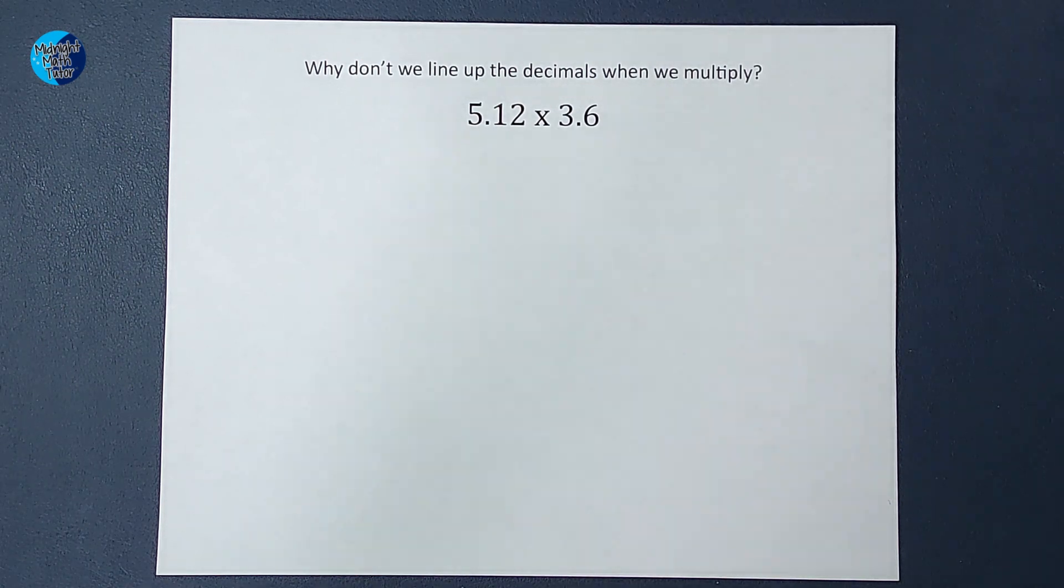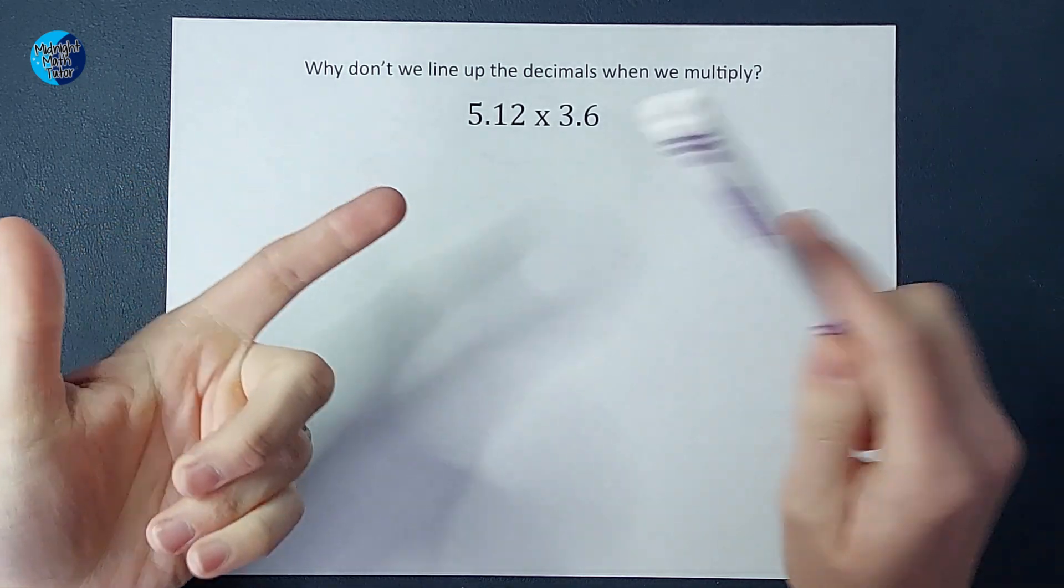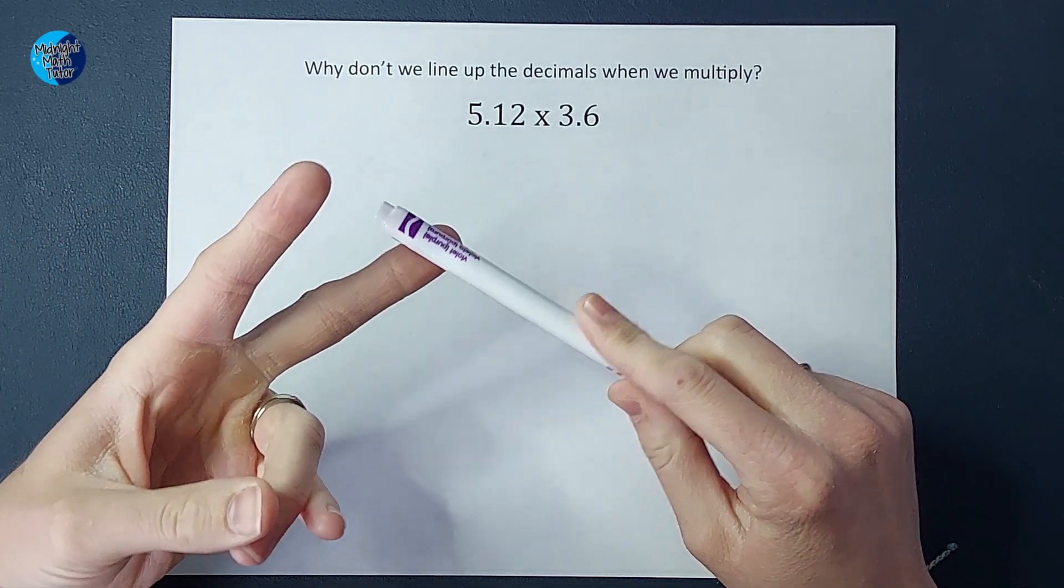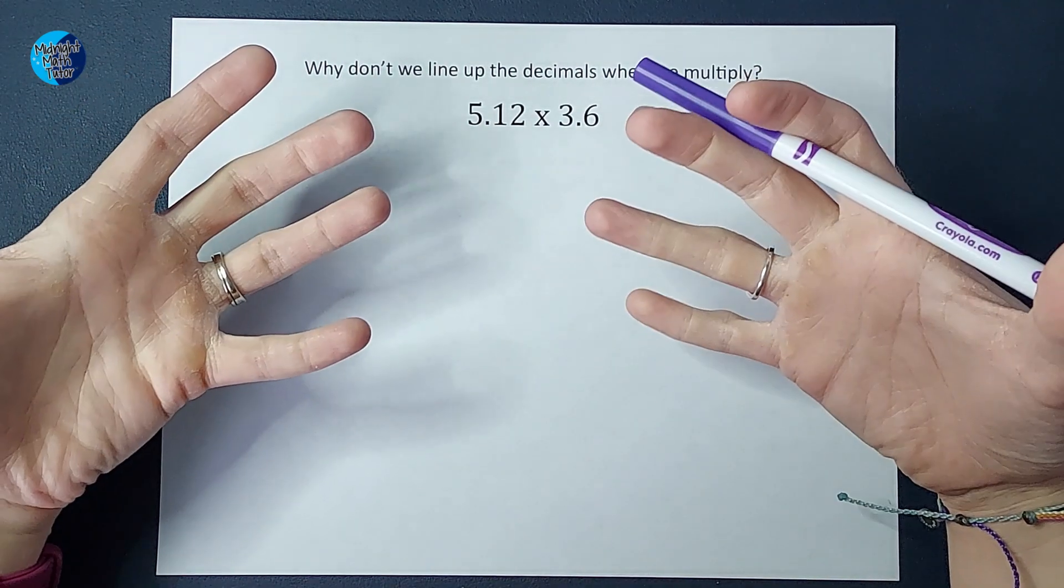Hey guys, today we are going to explore this question: why don't we line up the decimals when we multiply? If you've been adding and subtracting decimals, you know the hard and fast rule is the decimals have to be lined up when you add and subtract those.